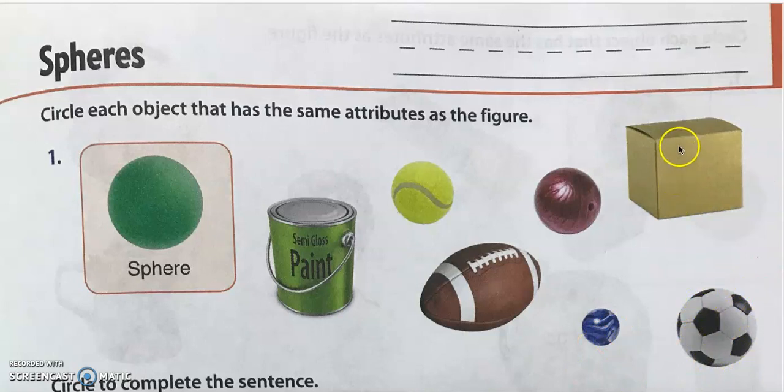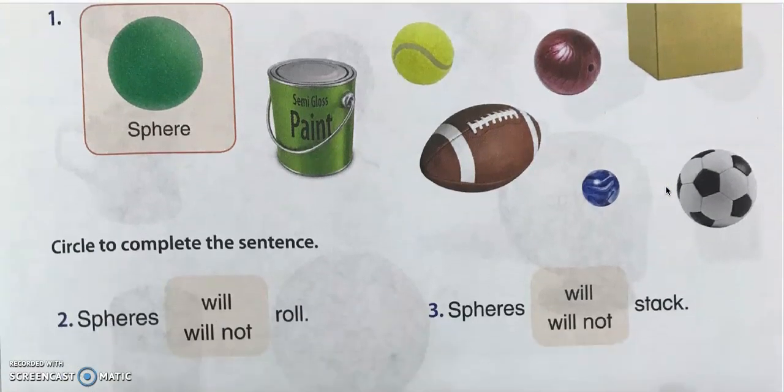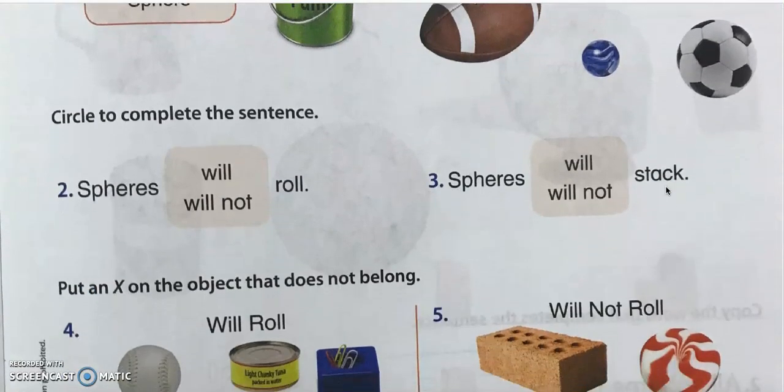And this last one — not at all. It only has flat surfaces. It's a box. Moving on to number two: circle to complete the sentence.